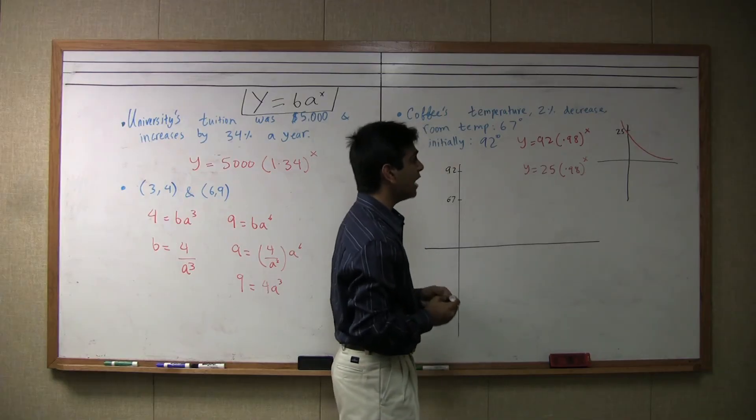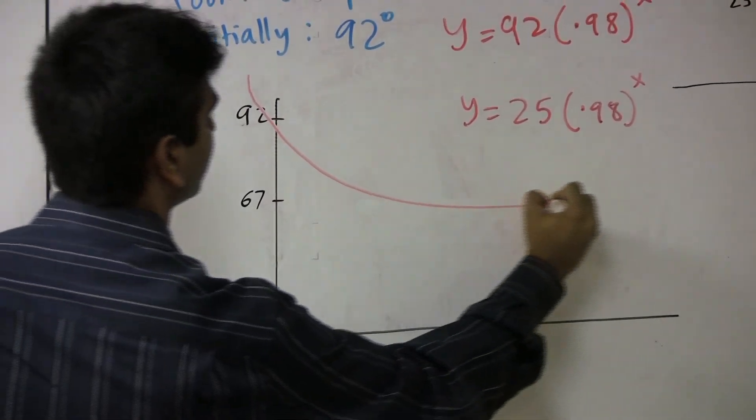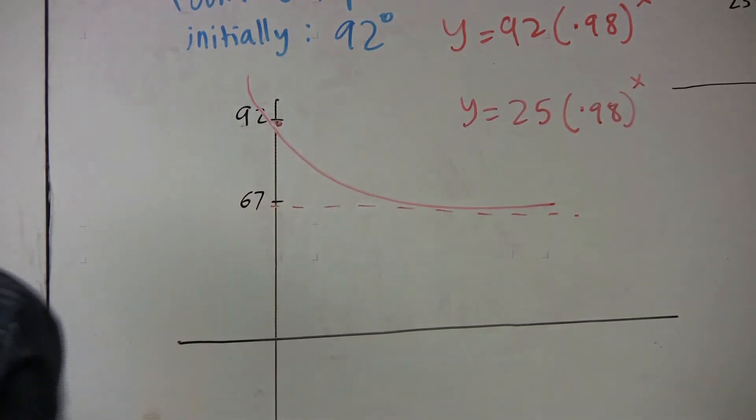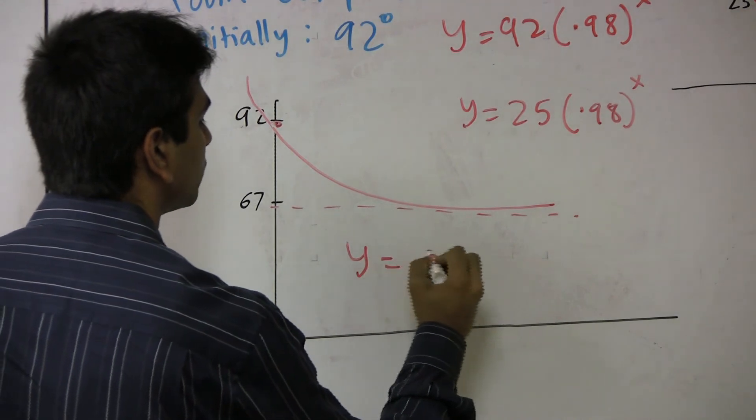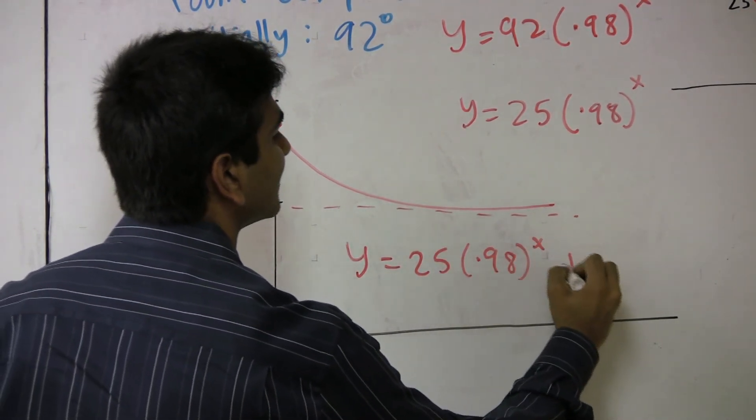All we have to do now is shift this by 67 units up, and it will now look like this. It will eventually go up to 67 degrees, and be at 92 in the beginning. So the final equation for this problem will be y equals 25 times .98 to the x plus 67.